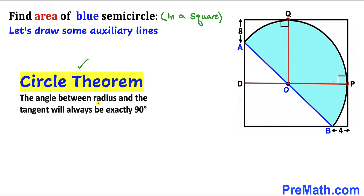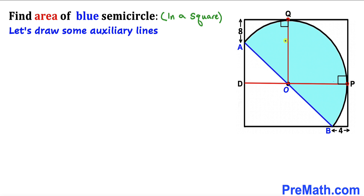Now let's recall the circle theorem. According to this theorem, the angle between the radius and the tangent will always be 90 degrees. So these angles are 90 degrees each, since these are our tangents and these are our radii. We can see that QO is the radius of this semicircle — let me label this radius as lowercase r. Then this length is going to be r as well.